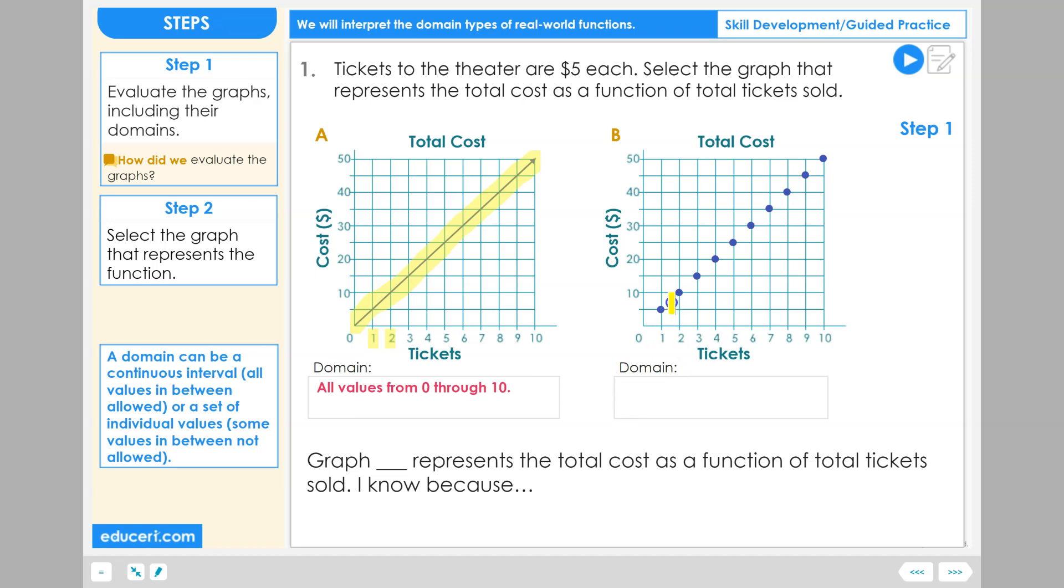The domain of graph B is not continuous. It is a set of individual values: 1, 2, 3, 4, 5, 6, 7, 8, 9, and 10.